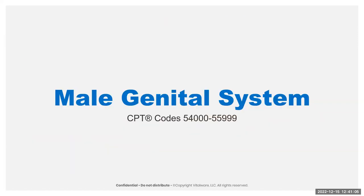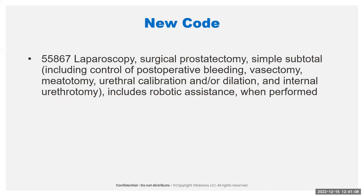In the male genital system, there is a new code for a laparoscopy of a surgical prostatectomy. This is considered a simple procedure and is performed for benign indications. This differs from your radical prostatectomy because it's not including the removal of the total gland or the tissue around the gland. But it is going to include the control of any post-op bleeding, a vasectomy, meatotomy, and some other items. If it does include robotic assistance, that's also included.